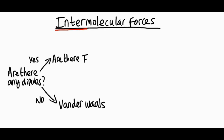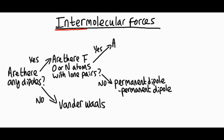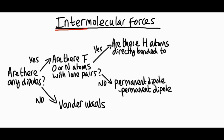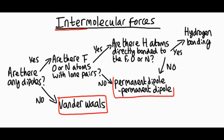Are there any atoms of fluorine, oxygen, or nitrogen with lone pairs of electrons? If no, the intermolecular force is permanent dipole–permanent dipole. If yes, we ask a further question: are hydrogen atoms directly bonded to those F, O, or N atoms within the molecule? If yes, then there will be hydrogen bonding between the molecules. If no — there aren't any hydrogens directly bonded to the F, O, or N — then it's permanent dipole–permanent dipole. So you have three types: van der Waals, permanent dipole–permanent dipole, and hydrogen bonding. Using this flowchart, you can always work out the type of intermolecular force at work.